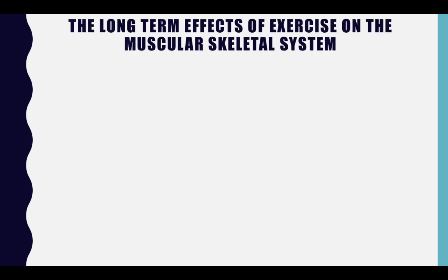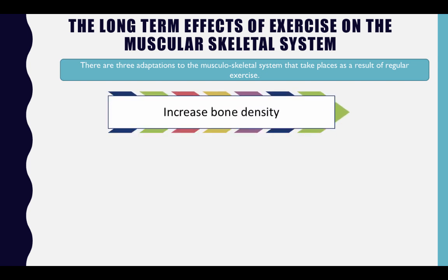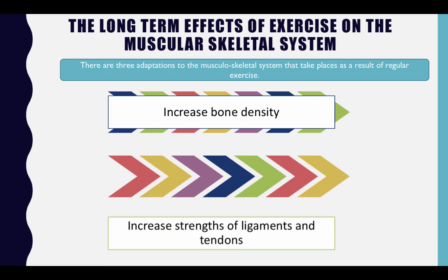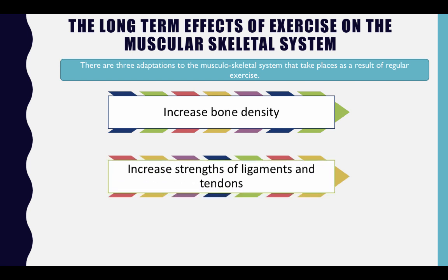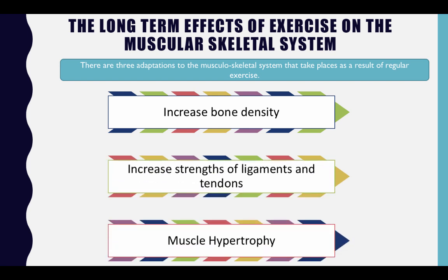There are three adaptations to the musculoskeletal system that take place as a result of regular exercise: an increase in bone density, an increased strength of ligaments and tendons, and muscle hypertrophy.